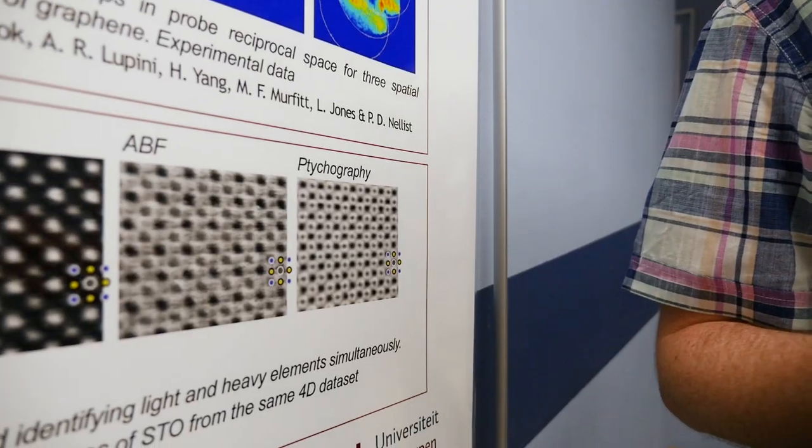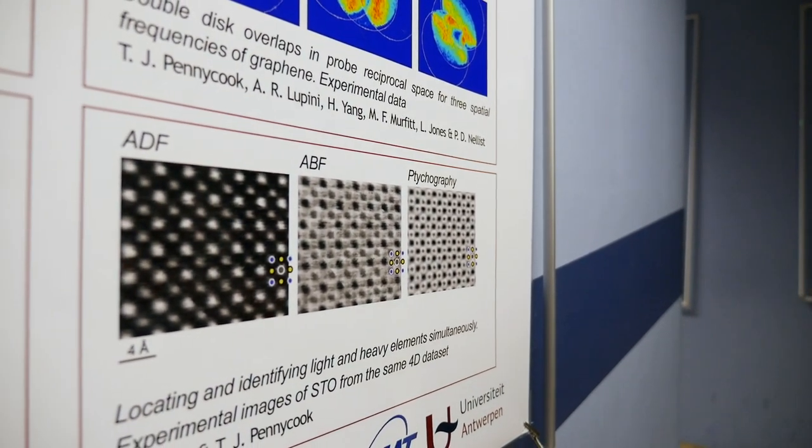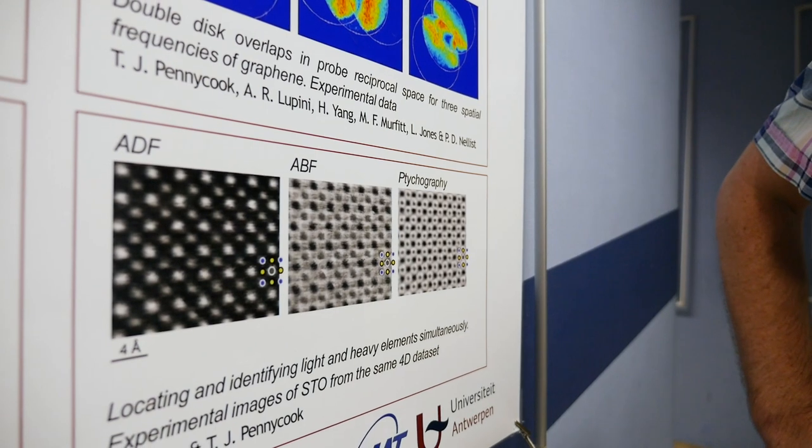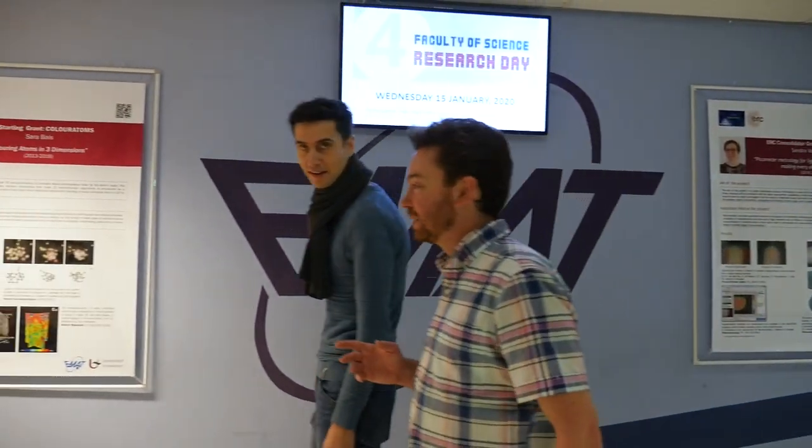If we bring in a new technique in the bright field, ABF as you see here, you start to see a little smudge where the oxygen atoms are. Now if you look at the technique that I've been working on, electron ptychography, you can see really very clearly where those oxygen atoms are, where their positions are.